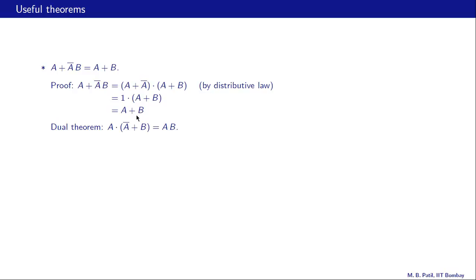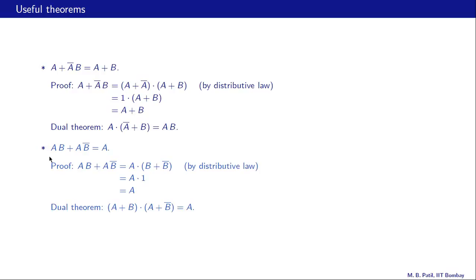There is a dual theorem corresponding to the previous one, and you should figure out how it follows from the original. Another theorem: a·b plus a·b̄ equals a. We factor as a·(b plus b̄) using the distributive law, and b plus b̄ is 1, giving a·1 which is a. Once again there is a corresponding dual theorem you should verify.